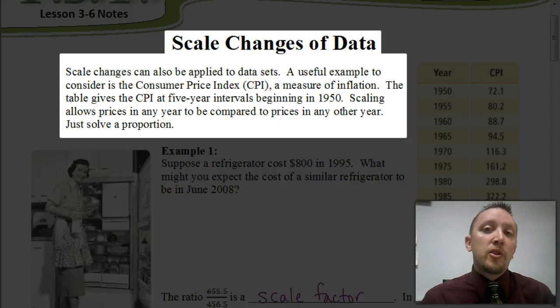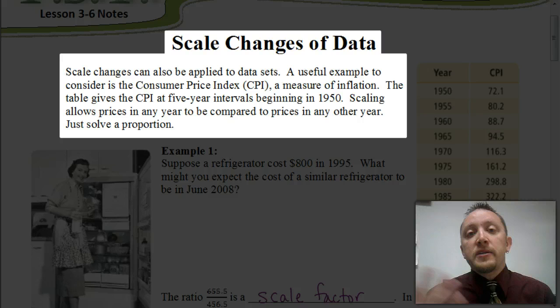But to start out with, we're going to be looking at what we call CPI. CPI is called the Consumer Price Index. And what that does is that adjusts a price on inflation. If we want to figure out, like, let's say a loaf of bread costs 50 cents back in 1975,